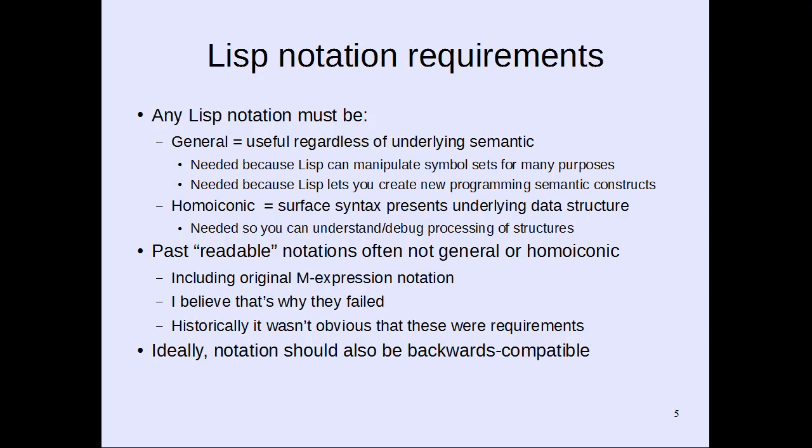So what are the requirements for a LISP notation? Any LISP notation must be at least general and homo-iconic. General means it needs to be useful regardless of the underlying semantic. It also needs to be homo-iconic — the surface syntax has to clearly present the underlying data structure, necessary so that you can understand and debug processing of structures. Sadly, past readable notations weren't general or homo-iconic, including the original M-expression notation, which is why those past readable efforts failed.